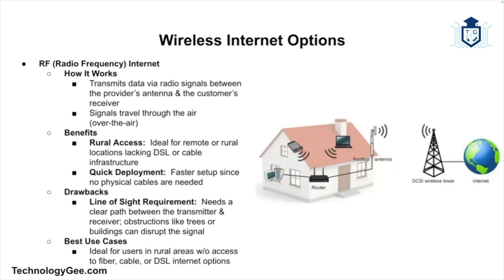Now let's turn to wireless internet options, which include radio frequency, satellite, and cellular. Wireless internet doesn't rely on physical cables. RF internet uses radio signals to transmit data between a local service provider's antenna and a receiver installed at the customer's location. These signals travel over the air. RF internet is especially useful in rural or remote areas where physical cables for DSL or cable are not available.